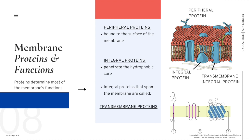Let's look at membrane proteins and their functions. A membrane is a collage of different proteins, often clustered in groups and embedded in the fluid matrix of the lipid bilayer. Phospholipids form the main fabric of the membrane, while proteins determine most of the membrane's functions. There are two major categories of proteins: peripheral proteins, which are bound to the surface of the membrane, and integral proteins, which penetrate the hydrophobic core. Some integral proteins span the entire membrane and are called transmembrane proteins — trans meaning across.